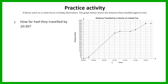How far had they traveled by 10:30? We first find 10:30 on the graph and go up to where the graph is — the distance there is 260 kilometers. When the question asks how far they had traveled by 10:30, that means the total distance from the beginning of the journey until 10:30. So at 10:30, they had traveled 260 kilometers.